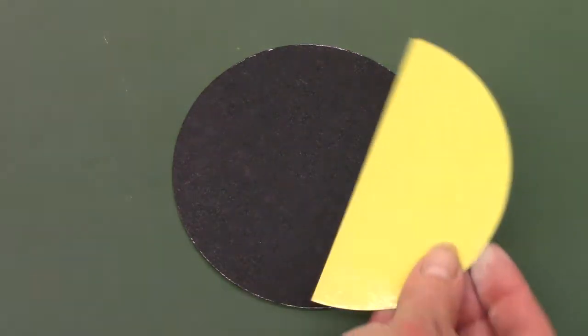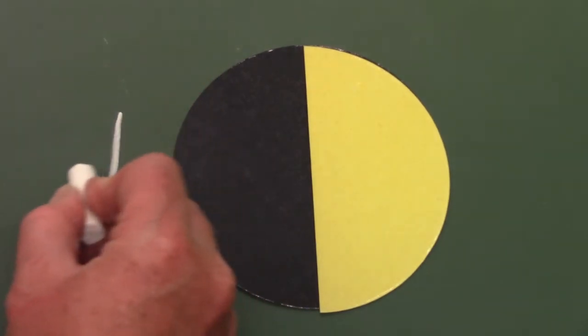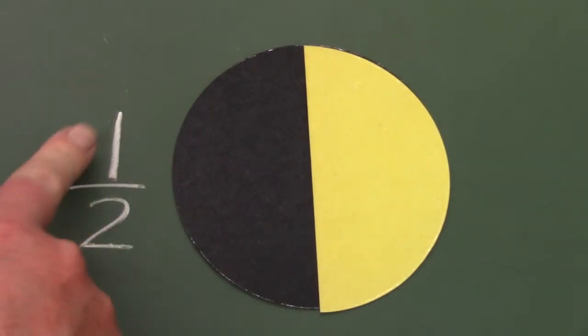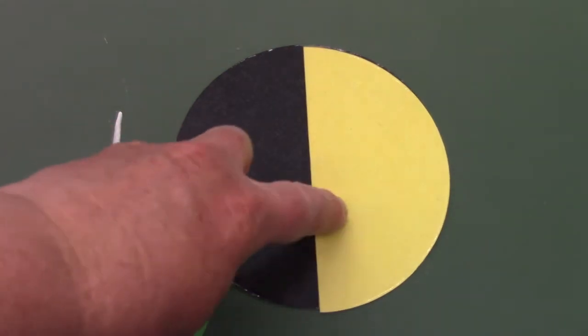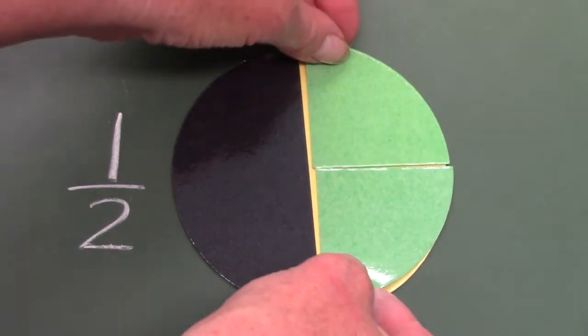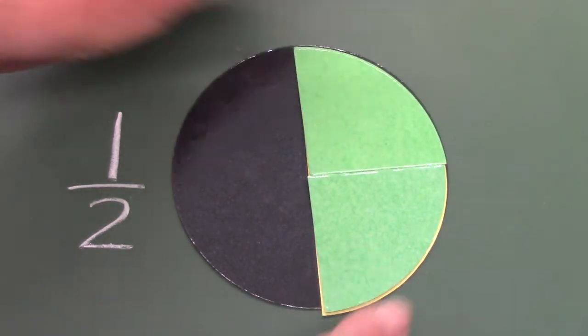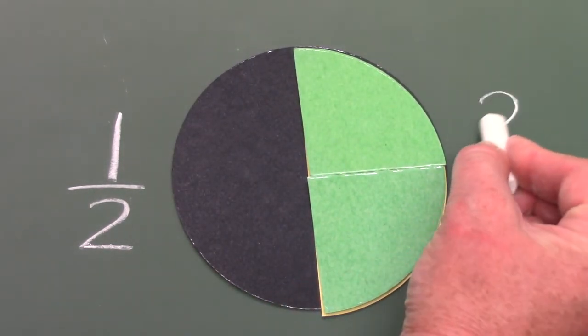Let's take a look at this really closely. This is one-half or one out of the two pieces that we would need to make a circle. But I'm wondering, how many of the one-fourth pieces would we need to cover one half? Can you guess? Let's try it. How many pieces did I need? Yes, I needed two.